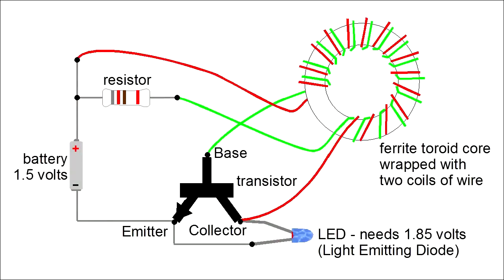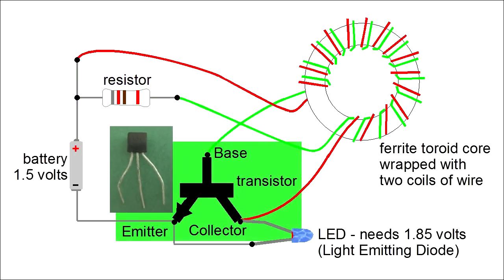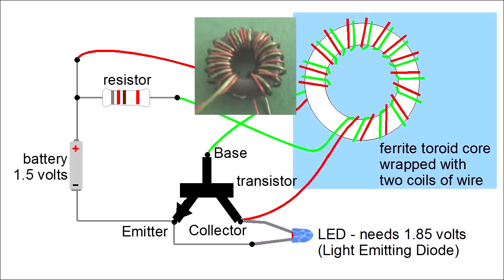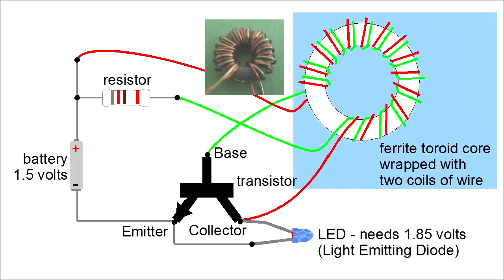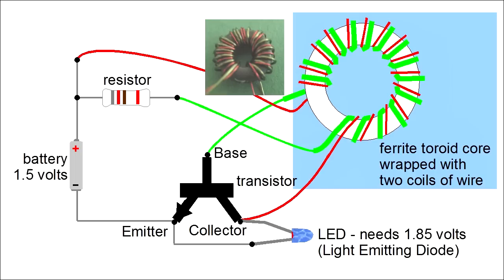Here's the circuit with its few parts: a double A 1.5 volt battery, a resistor, a transistor, and an LED. There's also this ferrite toroid with two coils of wire wrapped around it. In this case, one coil has red insulated wire, and the other has green insulated wire.